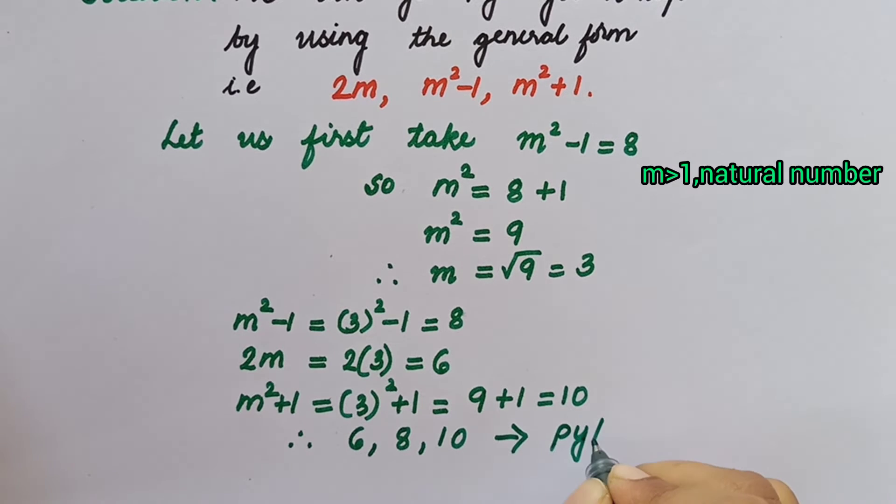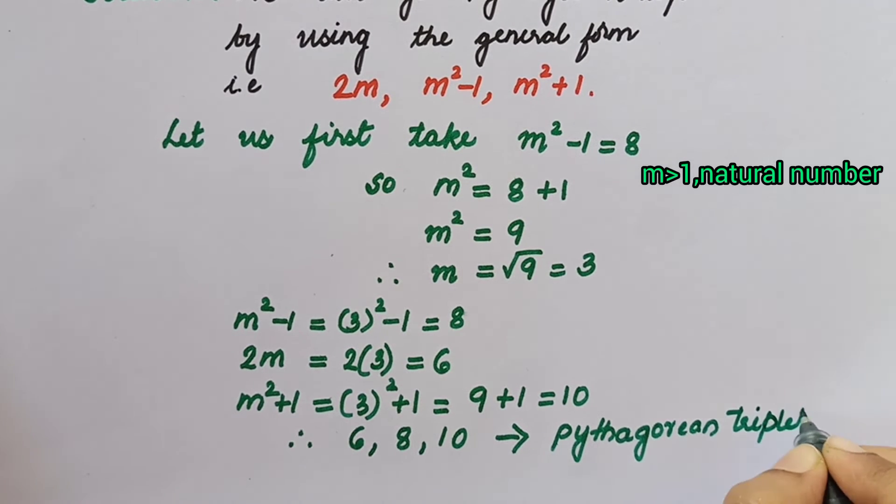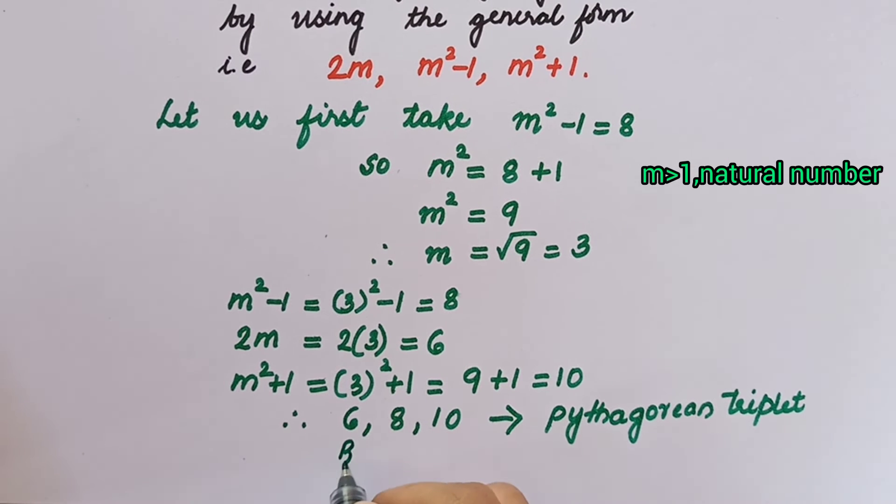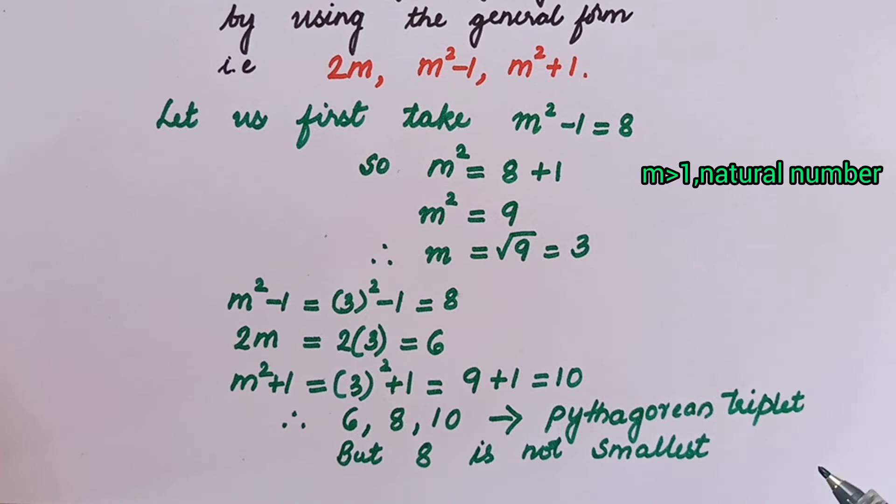Can we consider this Pythagorean triplet? See here, the smallest number is 6, but in the question they have asked to find a Pythagorean triplet where the smallest number should be 8. But here 8 is not the smallest number; 6 is the smallest number. Therefore, we cannot consider this Pythagorean triplet. We have tried with m square minus 1 equals 8.